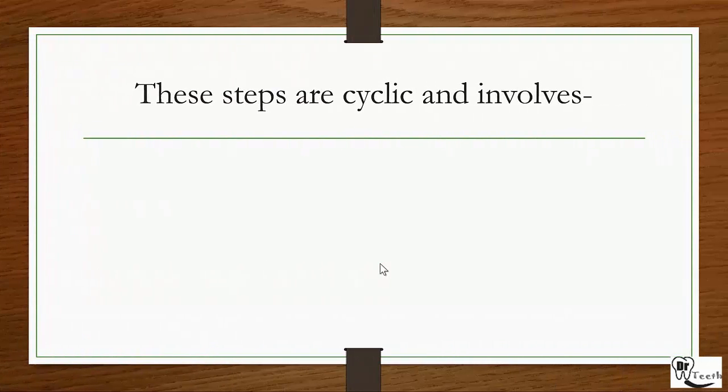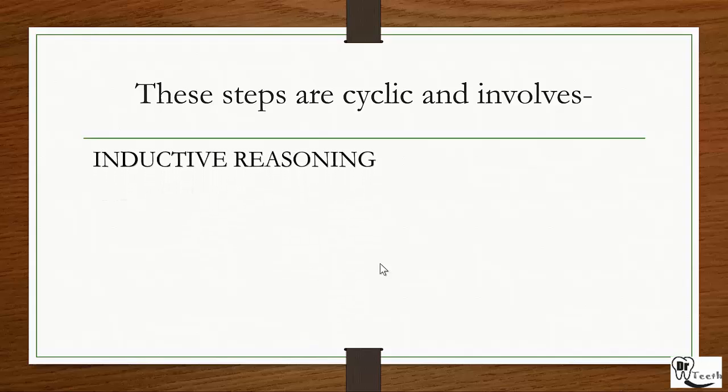These steps are cyclic and involve inductive reasoning and deductive reasoning. Inductive reasoning involves the observation of facts and the organization into a method of explaining phenomena in the real world theory. Deductive reasoning is applied to observe and verify the conditions of a theory developed through induction.